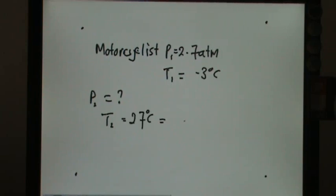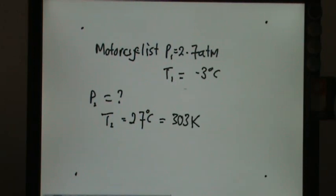27 Celsius is equal to 303 Kelvin. You plus 273 is 270 Kelvin.